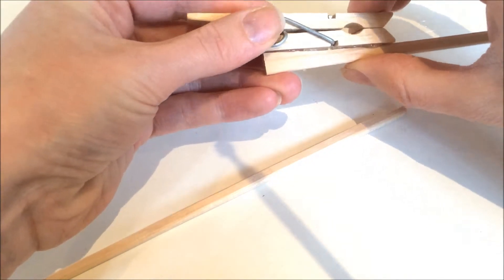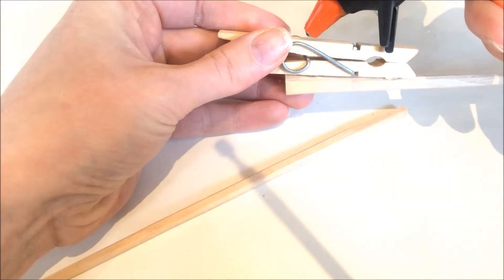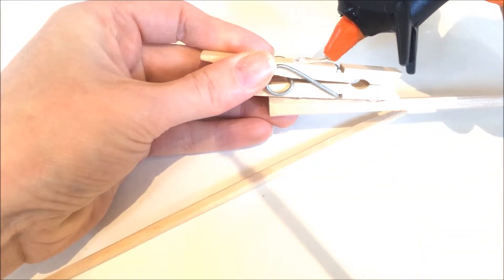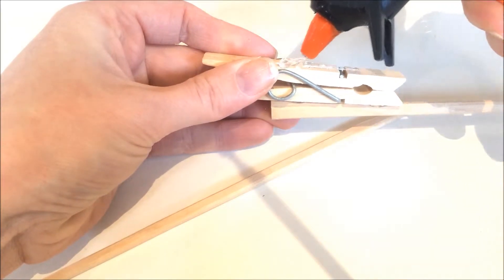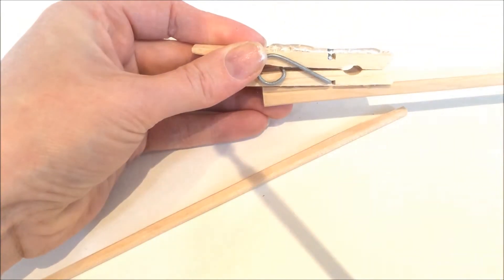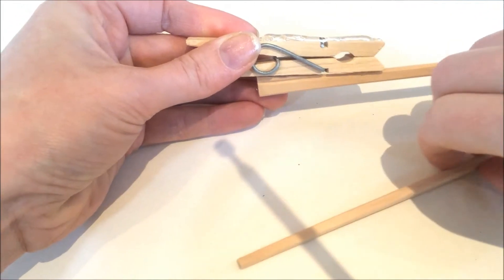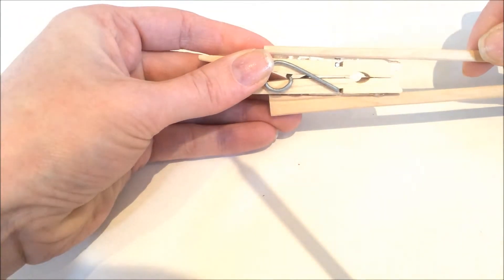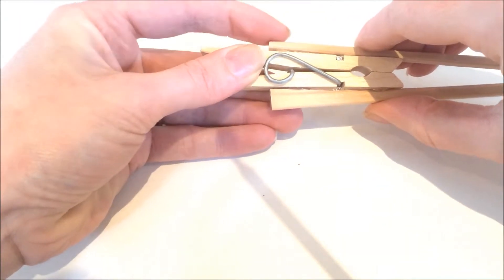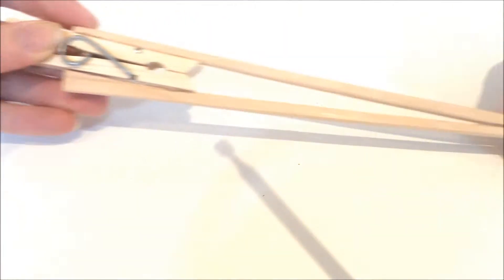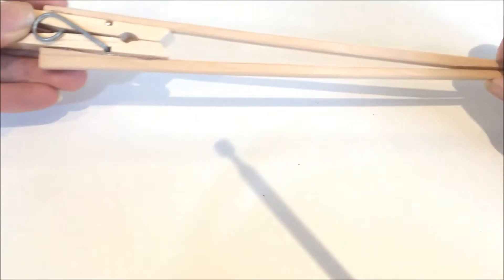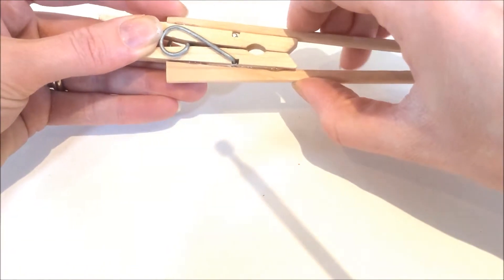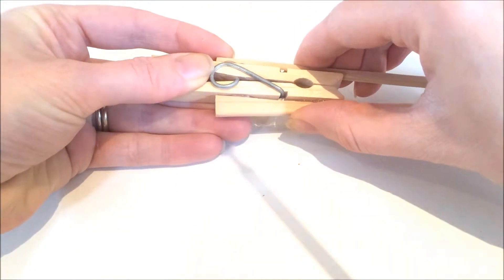Then, turn the peg over and do the same on the other side, applying the glue and holding the chopstick in place until both are solid. As the glue is drying, hold the tips of the chopsticks together to make sure that they are both aligned correctly.